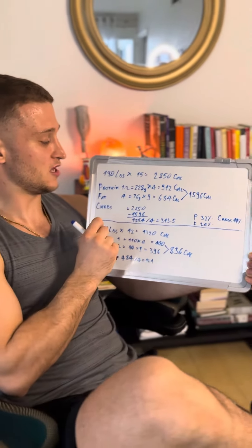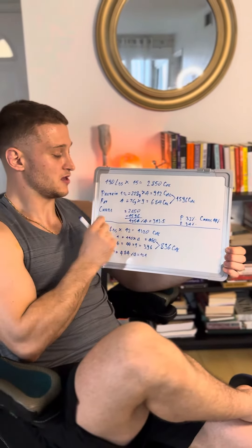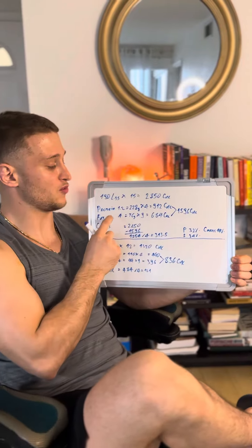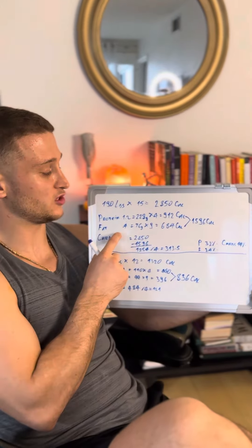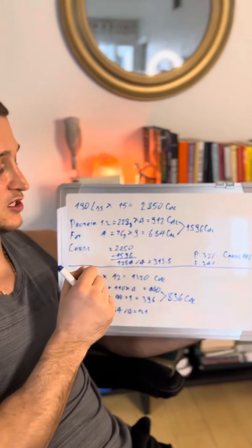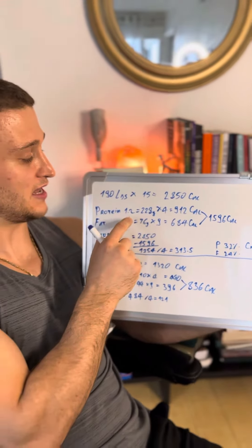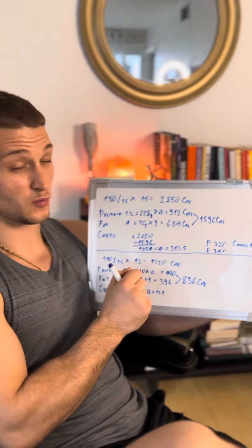Second thing, you have to figure out how much protein you're going to be eating. If you're going to build some muscle, you should be eating anywhere between 1 to 1.2 grams of protein per pound of weight. In my case, it's 1.2 because I want to be a big dog, and I multiply that with 190 to get 228 grams of protein.